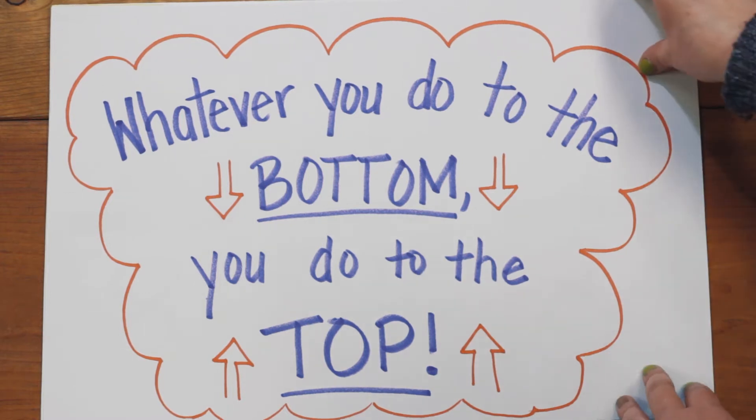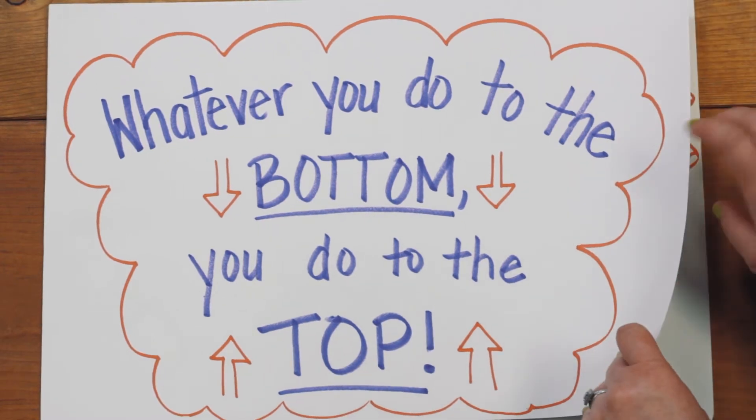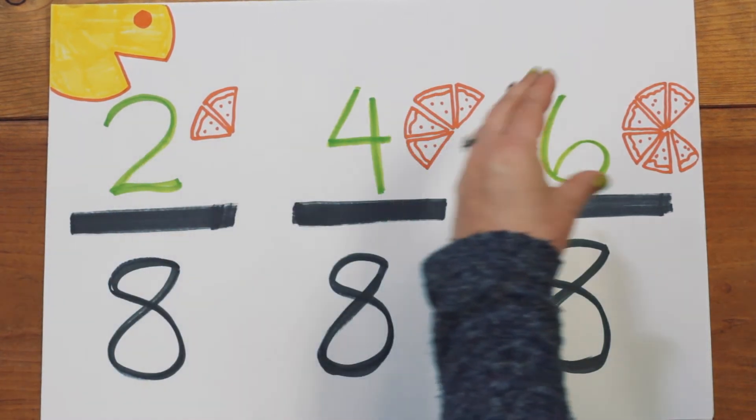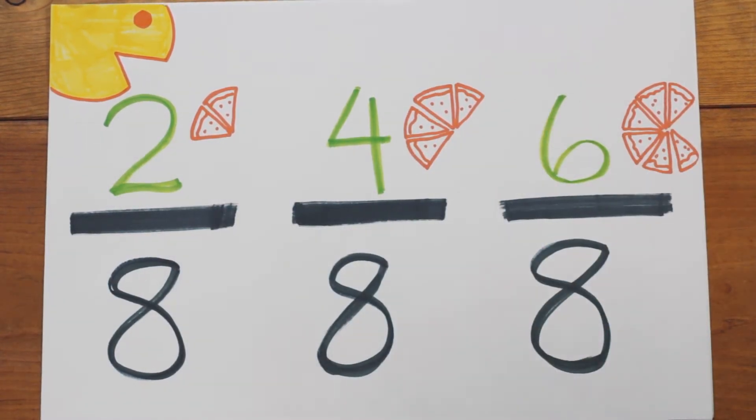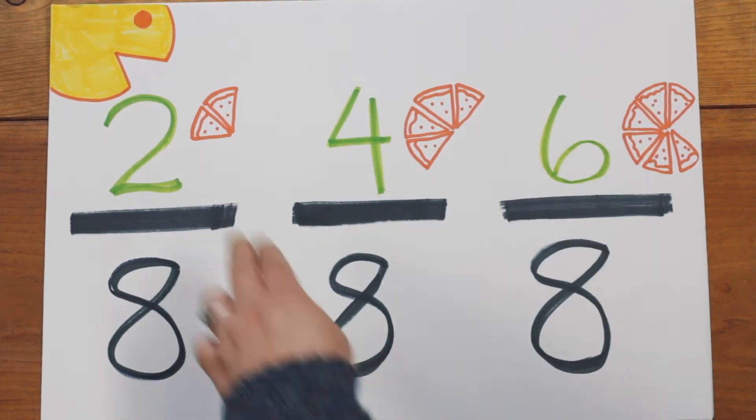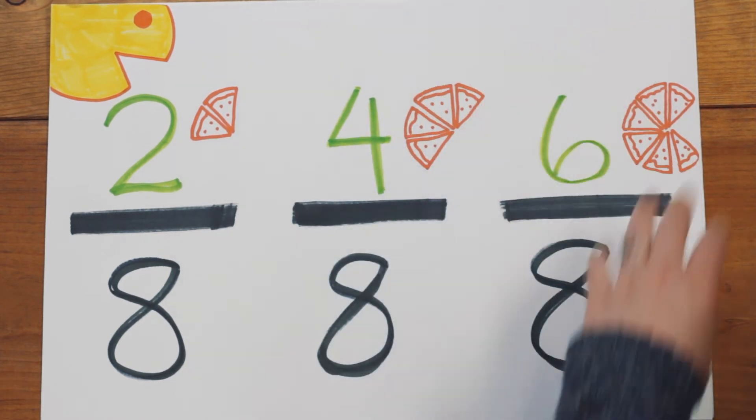So let's review really quickly about fractions. Remember when we talked about Pac-Man, how he eats the slices of pizza? The top number of a fraction represents those pieces. I get two pieces, four pieces, and six pieces.